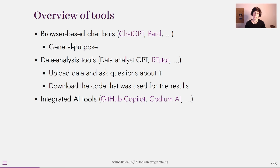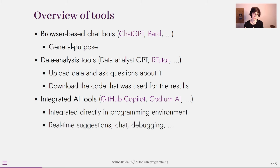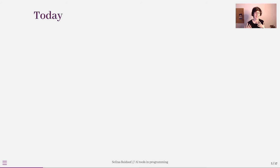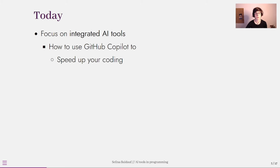The third type of tools are integrated AI tools such as GitHub Copilot or Codium AI. They are integrated directly into your programming environment, for example into RStudio or VS Code. You can use them directly in your workflow and get real-time code suggestions, use an integrated chat to ask questions and debug your code, and many more things.